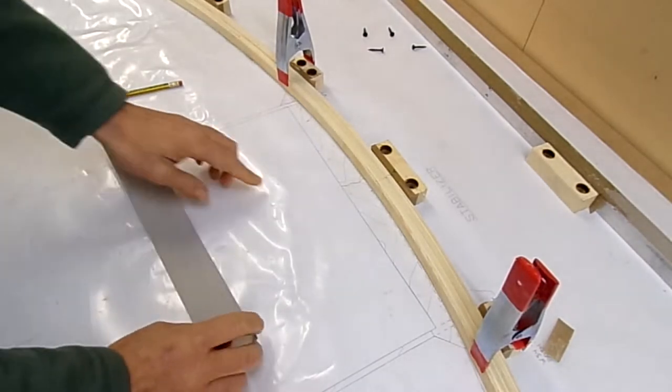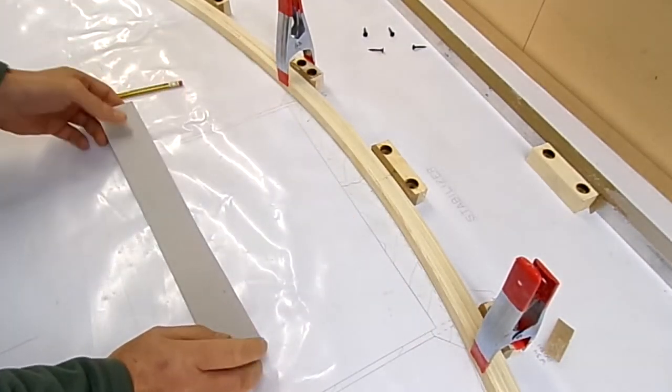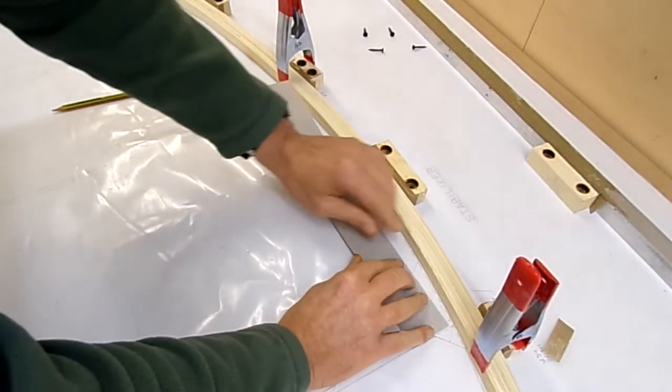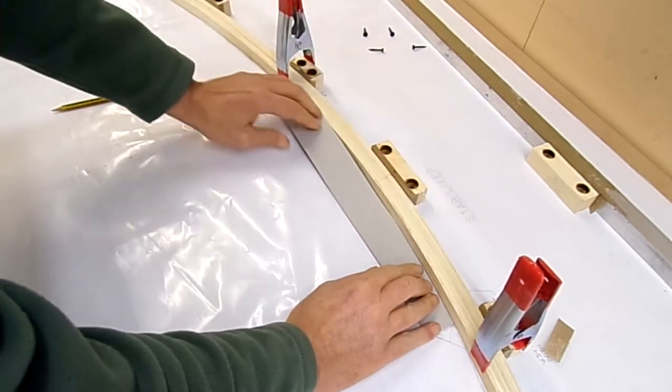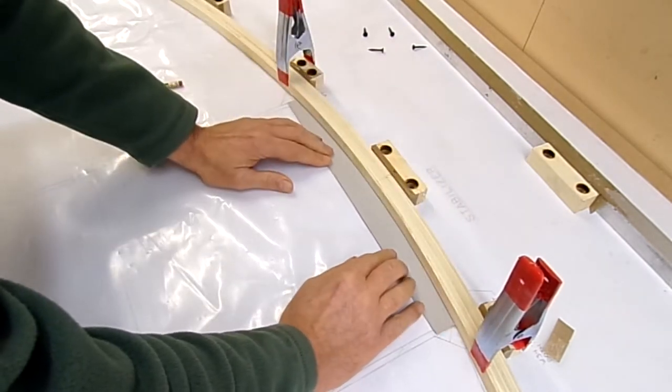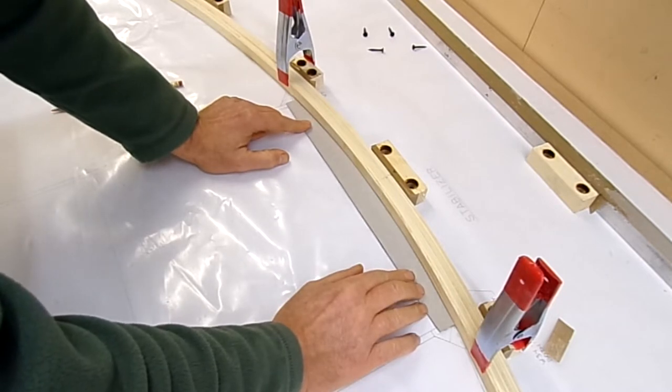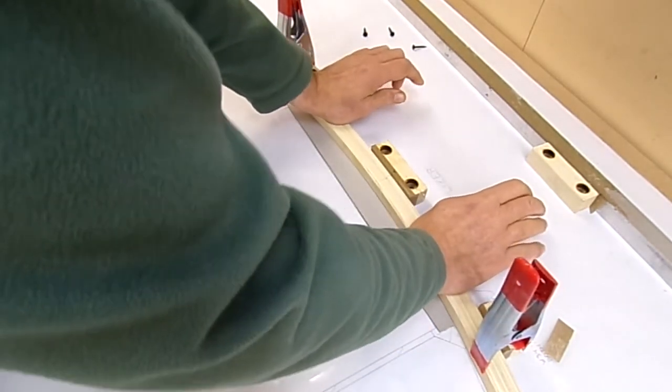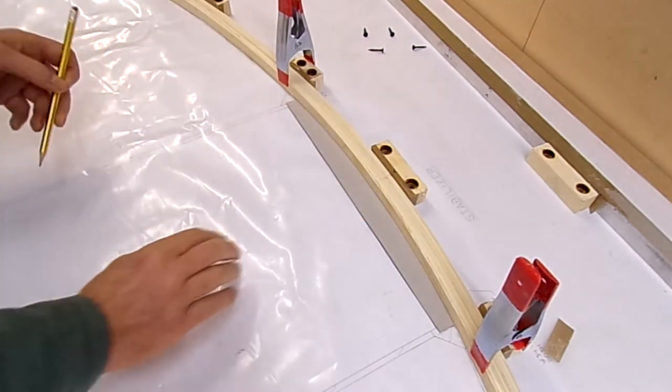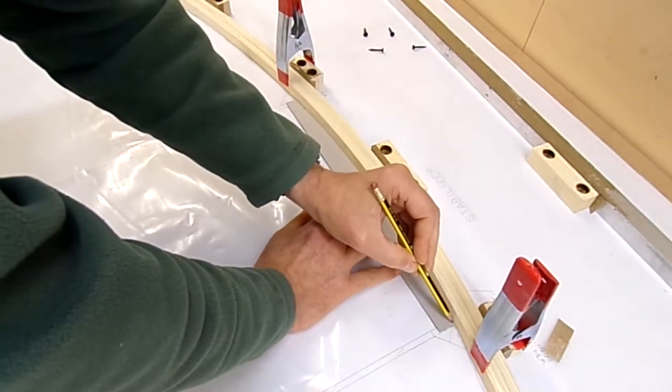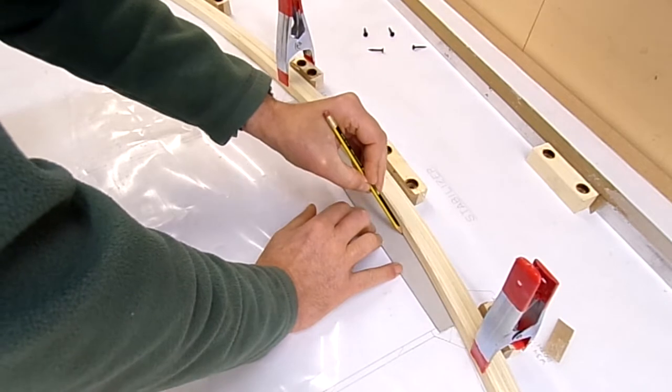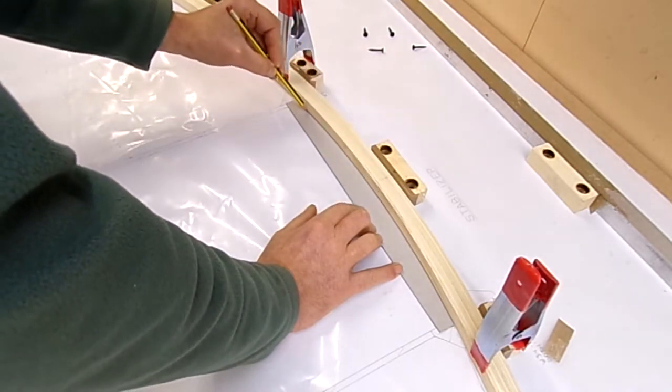So I'm going to fit this block here. I'm just going to use a piece of card as a template. Nothing particularly high tech here. I'm just going to slip that underneath. Make the trailing edge of that match up with the line on the plan. Push that down. I'll just go around here with a pencil so we actually get the perfect fit I hope.